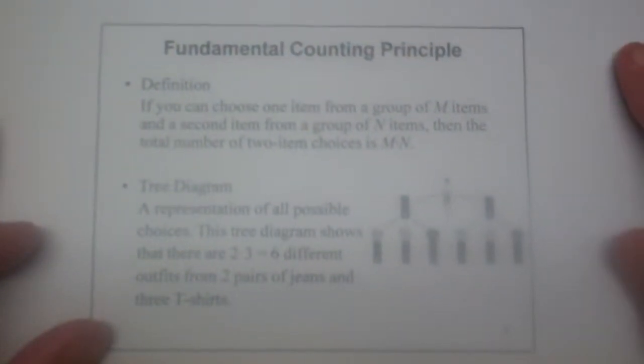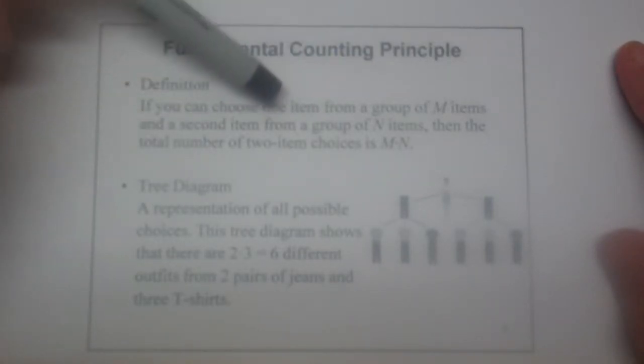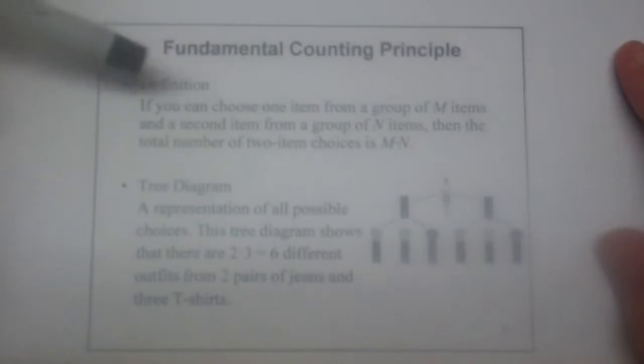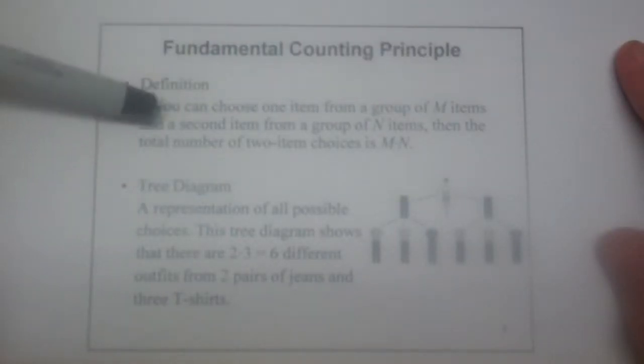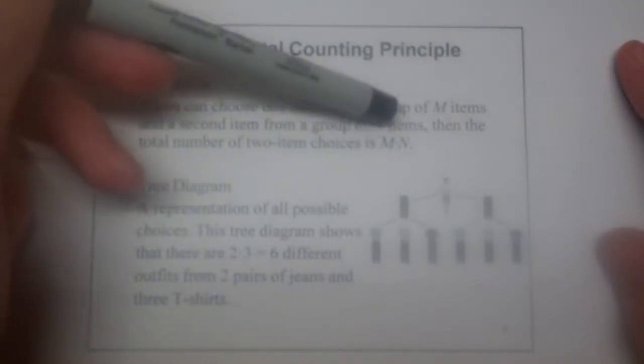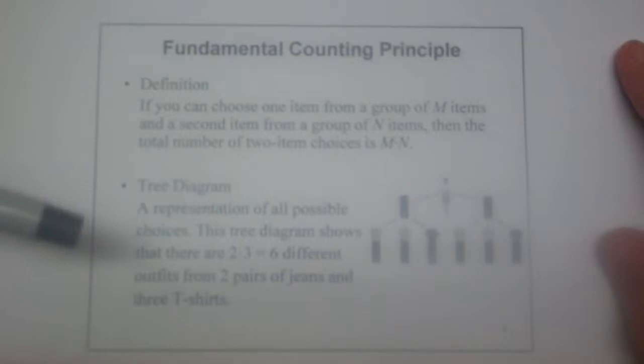To illustrate the Fundamental Counting Principle, if you can choose one item from a group of m items and a second item from a group of n items, then the total number of two item choices is m times n.